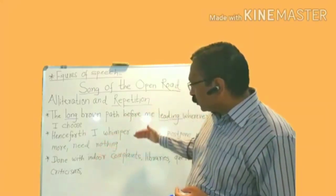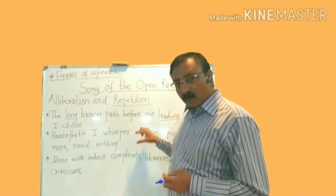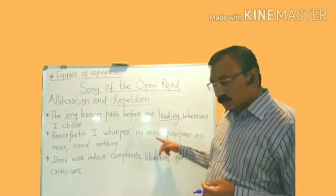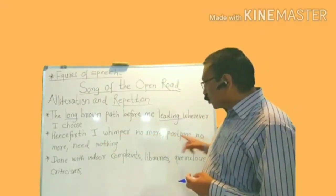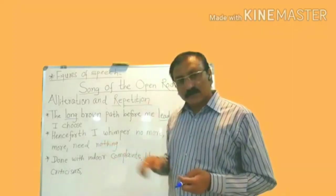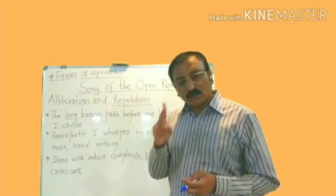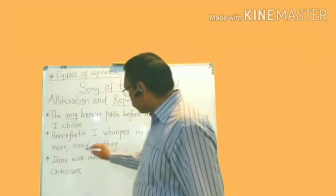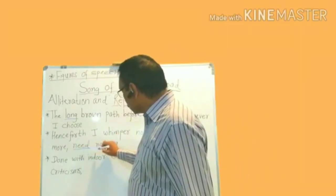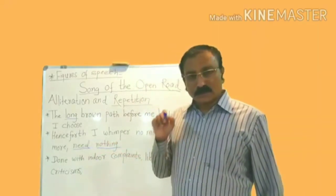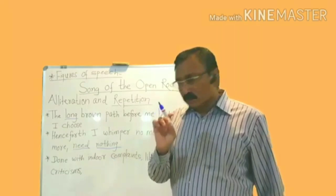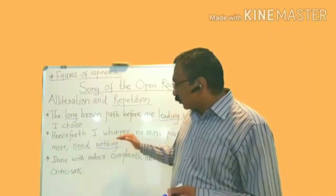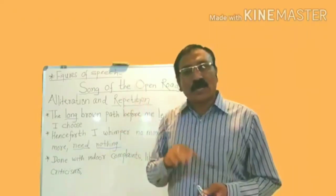In the same way, if you see the second line from the same poem: 'Henceforth I whimper no more, postpone no more, need nothing.' In this line also we have two words which begin with the same consonant sound — 'need' and 'nothing'. The word 'need' also begins with the sound 'n', and therefore this line is also an example of alliteration.